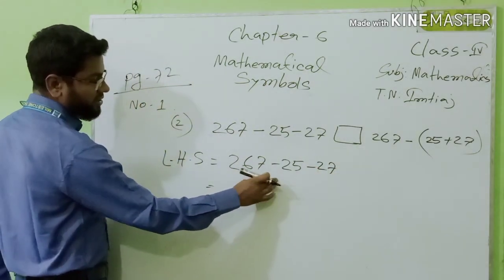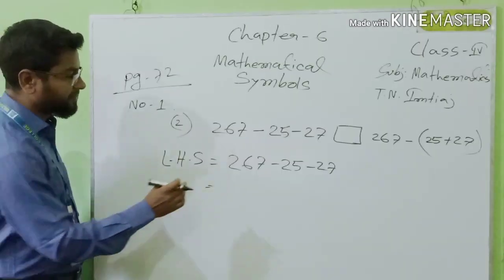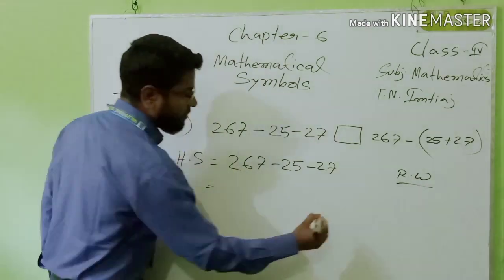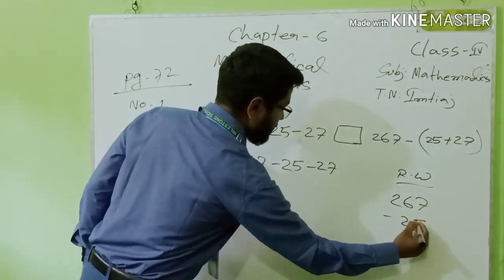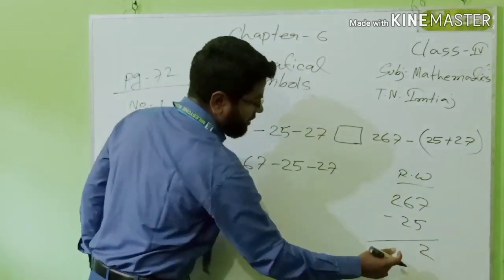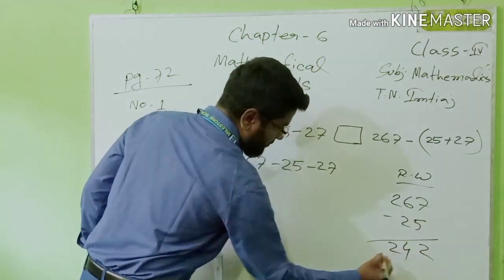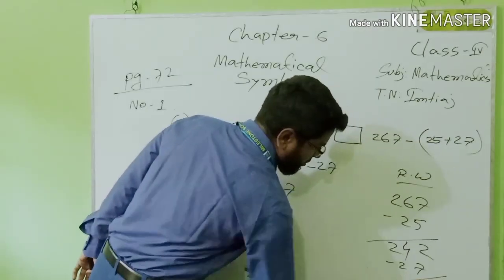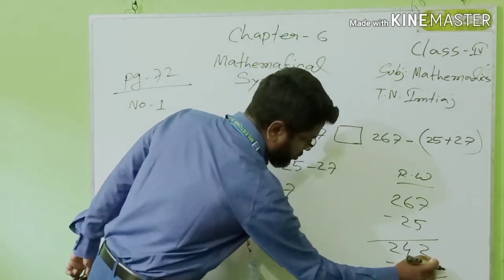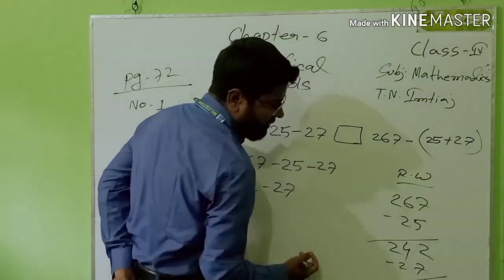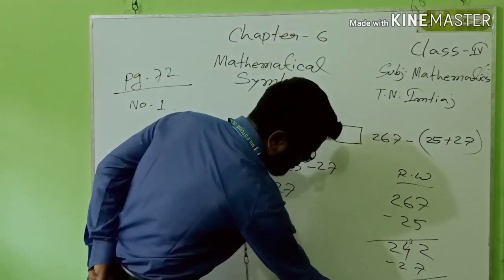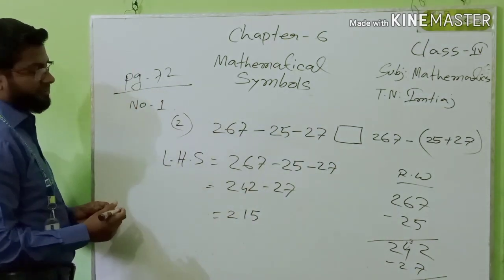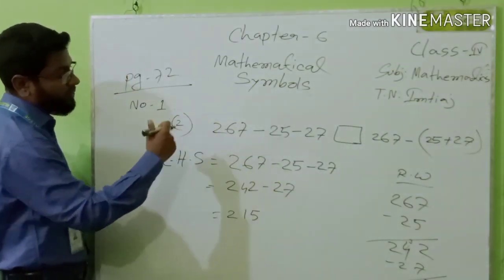We will solve this part first. 267 minus 25: 7 minus 5 is 2, carry nothing, 6 minus 2 is 4, so 242. Then 242 minus 27: 2 minus 7, we make it 12, it will be 5; carrying 1, 4 minus 1 is 3, 3 minus 2 is 1; giving 215. Wait — so the left hand side value becomes 250.